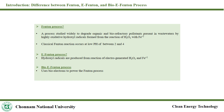An enhanced form of the Fenton Process is the E-Fenton Process. In this process, the hydroxyl radicals are produced from the reaction of electro-generated hydrogen peroxide and ferrous ions. In the Bio-E-Fenton Process, bioelectrons produced by microbes during the catalyzation of a substrate are used to power the Fenton Process. The later form of the Fenton process is discussed in this paper.